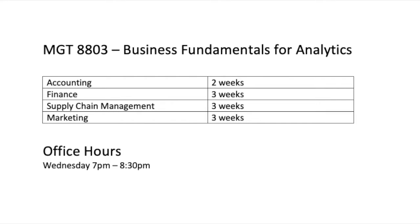Now let's talk about the modules you have to learn for this course: Accounting, Finance, Supply Chain Management, and Marketing. For accounting you have two weeks. Finance, Supply Chain, and Marketing you will have three weeks each. At the end of your second week you will have to take an examination, and usually they give you four days — they open it on Thursday and close it on Monday. If you're a full-time employee, you can really only take it on Saturday or Sunday, so that time feels pretty tight. As soon as you're done with one module you have to move on to the next one without a mental break.